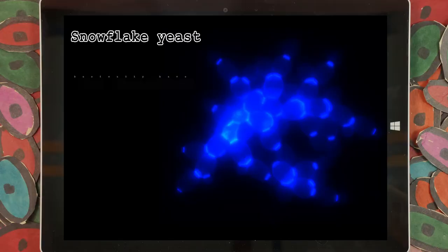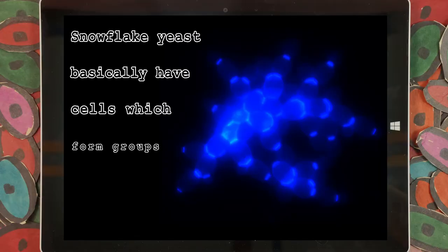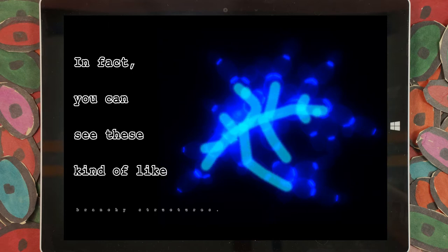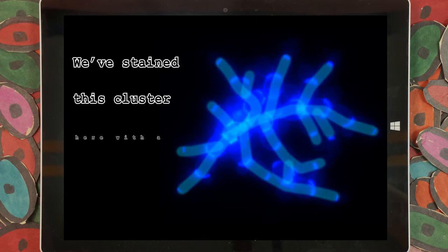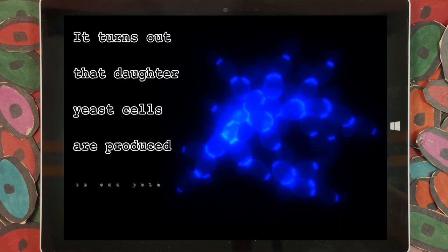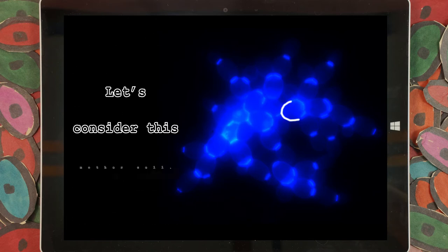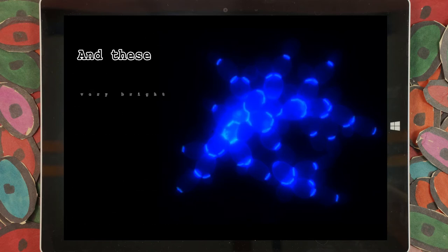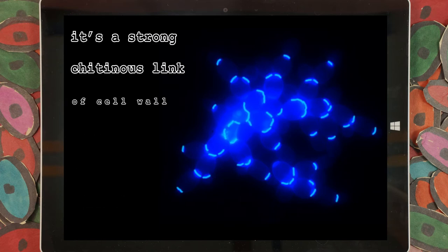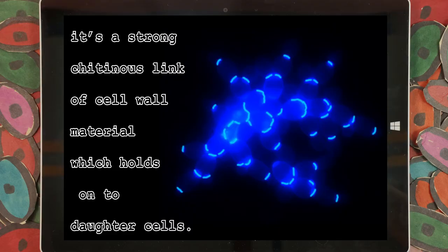Well, in order to answer that question, we need to take a look at the mechanism which allows these snowflakes to form. Snowflake yeast basically have cells which form groups through staying together. In fact, you can see these kind of branchy structures. We've stained this cluster here with a fluorescent cell wall stain. It turns out that daughter yeast cells are produced on one pole of the mother cell. Let's consider this mother cell. It's produced these three daughters here. And these very bright things are called bud scars. It's a strong chitinous link of cell wall material which holds on to daughter cells.